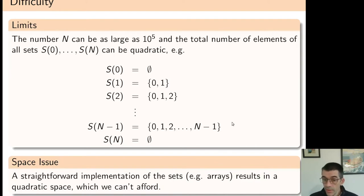Now if we implement the sets too naively, for instance using arrays of Boolean values, then this will use quadratic space, and we can't afford that.